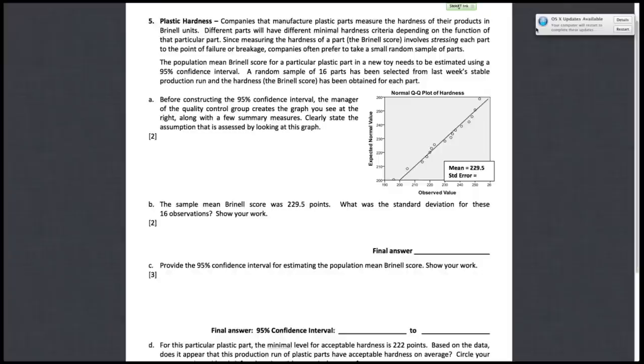So immediately, the graph tells you by the title that it's a QQ plot. And if you recall from lecture, a QQ plot is designed to test the assumption that the population of all hardness scores, or Brunel scores in this case, has a normal model. So essentially QQ plots are always testing normality of the population. And that is essentially the only thing you need to write here. So we'll go ahead and write that.